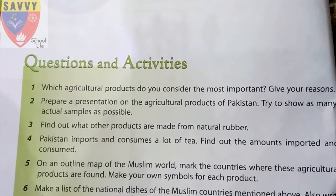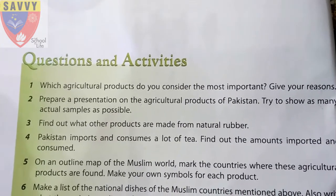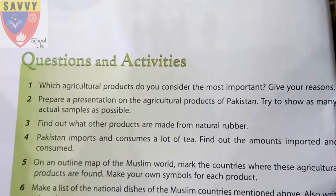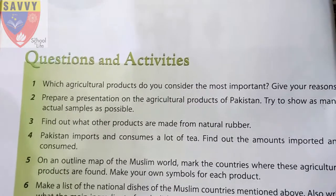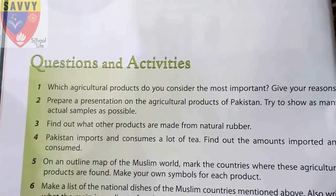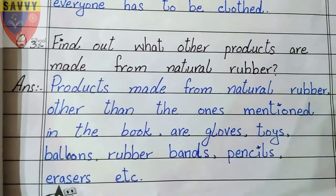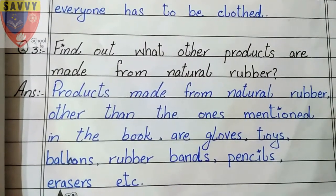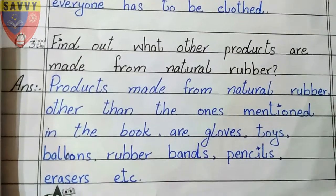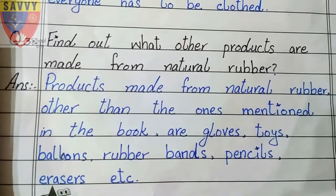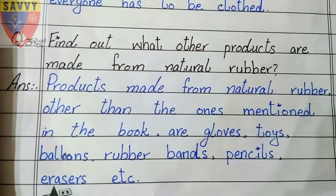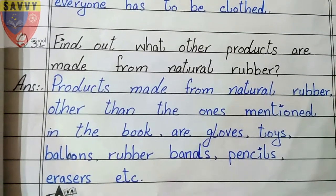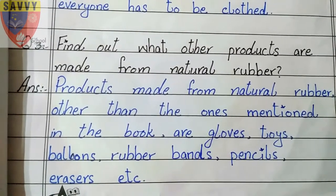The 3rd question is: find out what other products are made from natural rubber, other than the ones mentioned in the book. The other products made from natural rubber include: gloves, toys, balloons, rubber bands, pencils, and erasers.